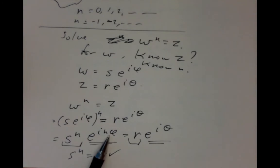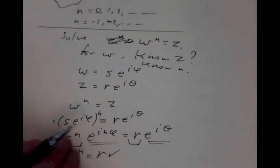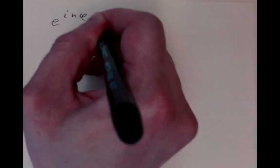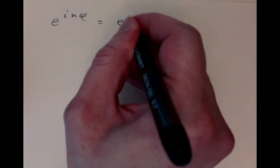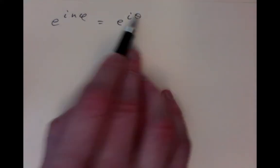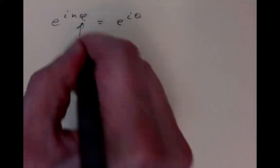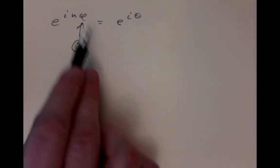You might think that maybe that makes n phi equal to theta, but it doesn't quite do that. If two numbers have the same e to the i whatever, what does that tell us about them? How can we understand the solvability of that kind of problem? We have e to the i n phi has to equal e to the i theta. We're given the theta. We don't know the phi. This is the unknown. Everything else is known.